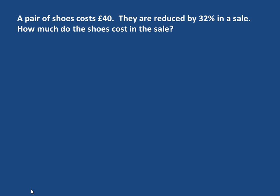Our first question says a pair of shoes cost £40. They are reduced by 32% in a sale. How much do the shoes cost in the sale? So what we need to do is we need to work out what 32% of £40 is.